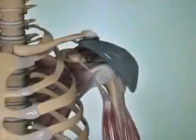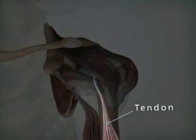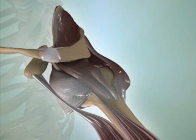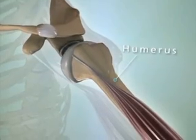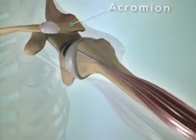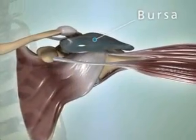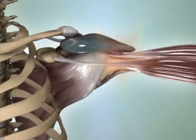Tendons are fibrous cords that connect muscles to bones. As a muscle contracts, it pulls on the attached tendon and causes the bone to move. The tendon is located between the humerus (upper arm bone) and the acromion. A layer of tissue sacs called bursa serves as a cushion between the tendon and the acromion. Since both the tendon and bursa are so close to one another, it may be difficult to determine which one is the source of your pain.